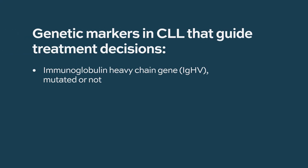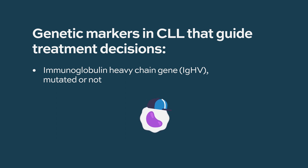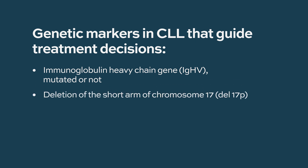There are two big categories. One is the immunoglobulin heavy chain gene — whether it's mutated or not. This tells us how mature or immature the cell is; if it's a very immature cell, it tends to indicate a more aggressive disease. Then there are specific gene mutations or chromosomal changes, such as deletions in chromosome 17p or mutations in the TP53 gene. These are important mutations that guide us on what to expect. Currently, the most commonly used risk stratification system does not include genetic information, but we know it is prognostic and will likely be part of a new classification system in the future.